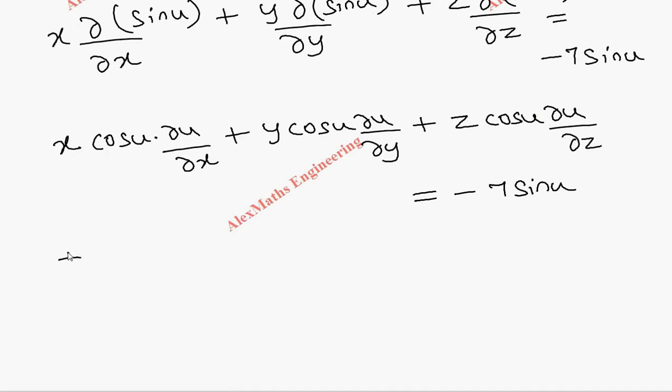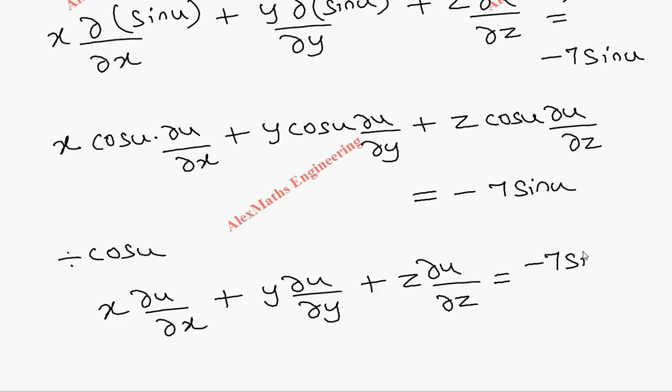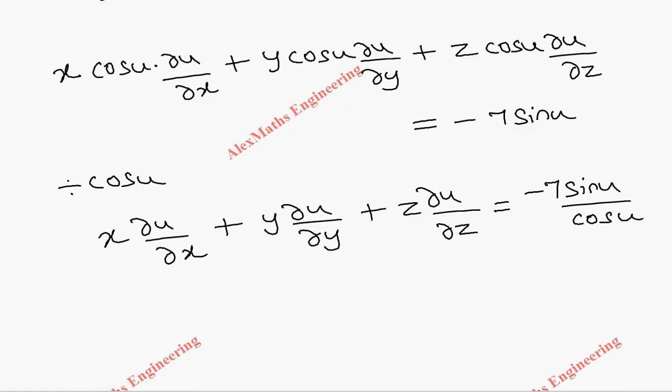This equals minus 7 sine u. Now throughout we can divide the common term, which is cos u. So x into ∂u/∂x plus y into ∂u/∂y plus z into ∂u/∂z equals minus 7 sine u divided by cos u, which will give us minus 7 tan u.